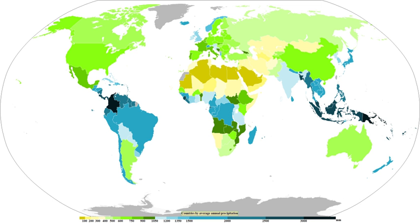The standard way of measuring rainfall or snowfall is the standard rain gauge, which can be found in 100 mm plastic and 200 mm metal varieties. The inner cylinder is filled by 25 mm of rain, with overflow flowing into the outer cylinder. Plastic gauges have markings on the inner cylinder down to 0.25 mm resolution, while metal gauges require use of a stick designed with the appropriate 0.25 mm markings. After the inner cylinder is filled, the amount inside it is discarded, then filled with the remaining rainfall in the outer cylinder until all the fluid is gone, adding to the overall total.